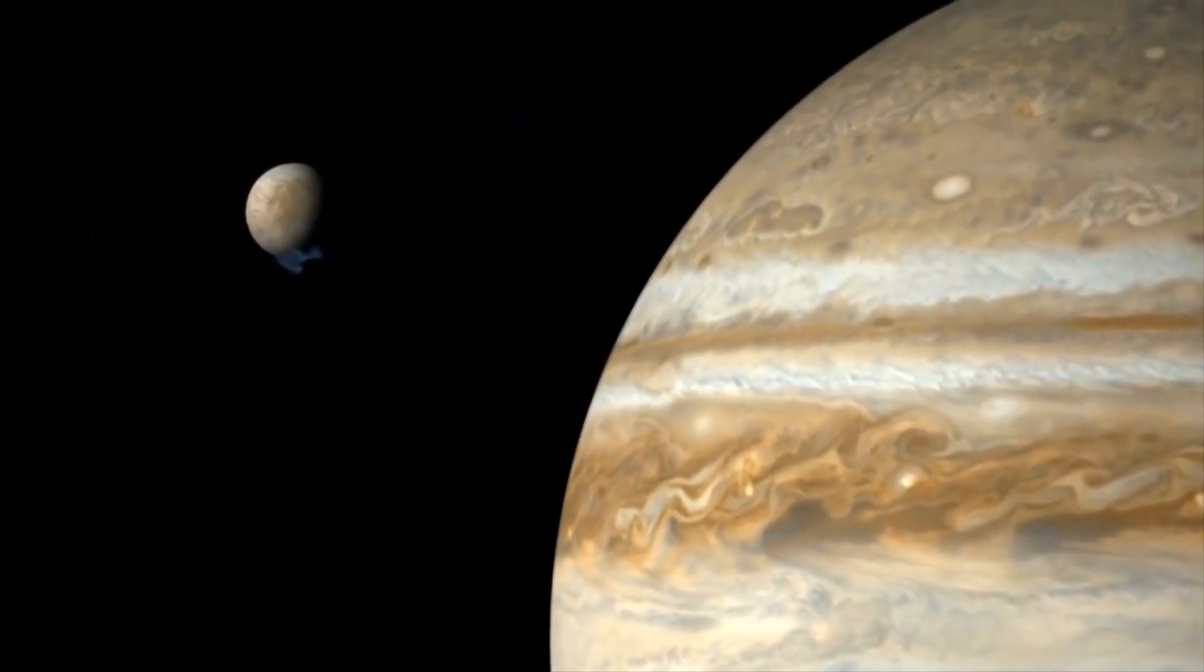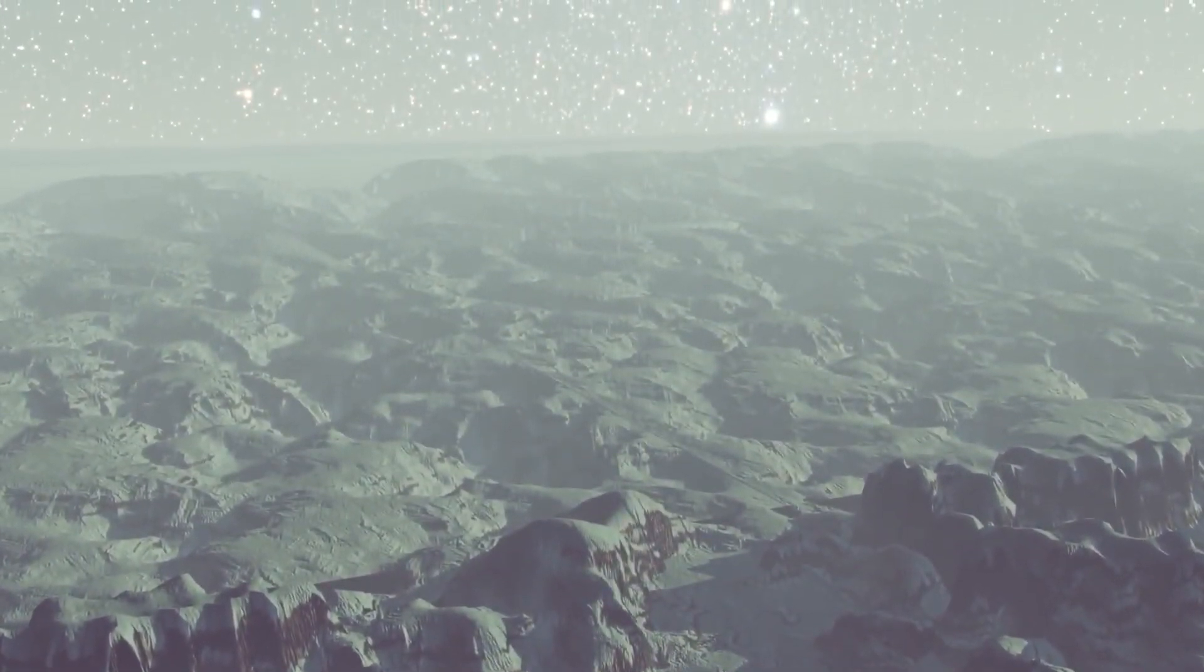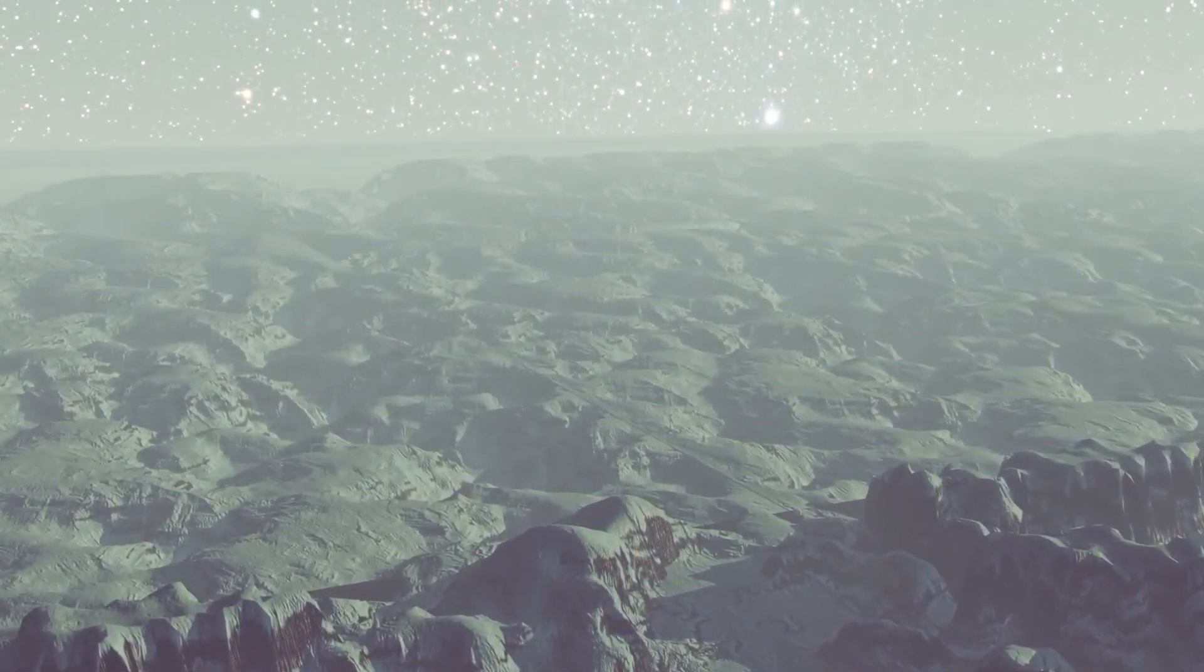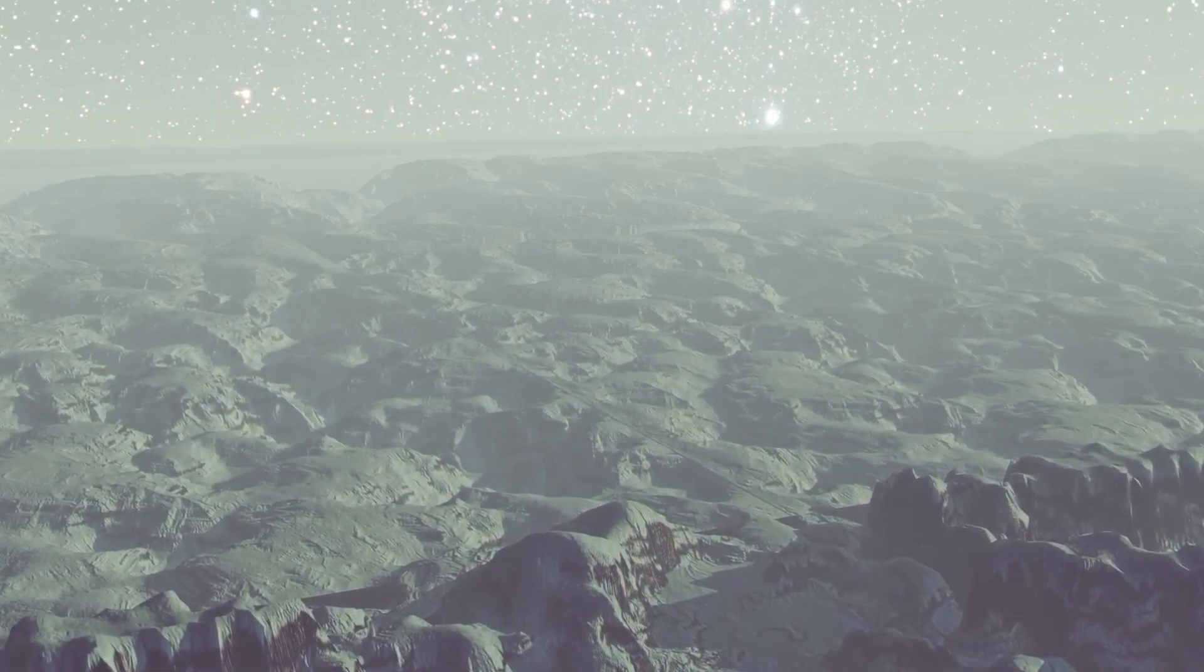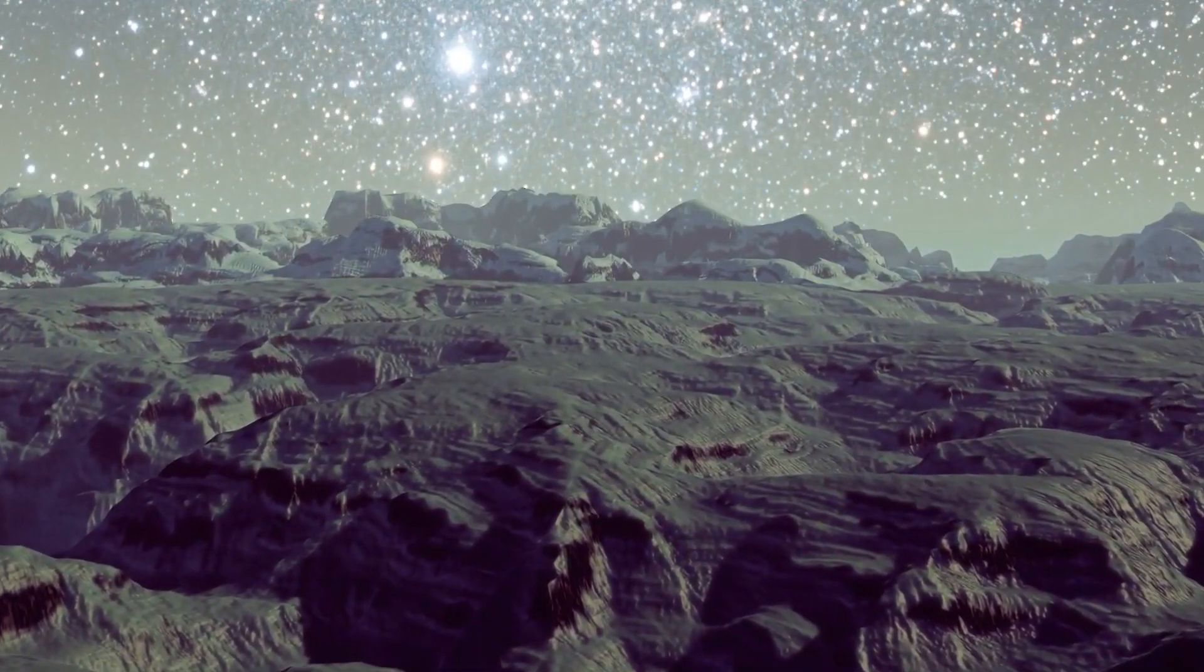If we take a close look at Europa's surface images, we will see signs of endogenous geological activity, such as lines, lenticles, bumps and pits, and the so-called Connemara chaos below the center.